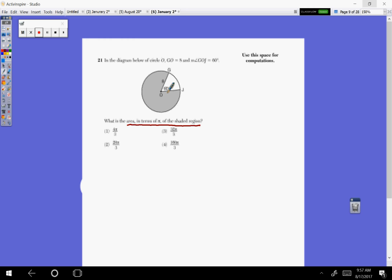So if this angle is 60, that means this angle is 300.